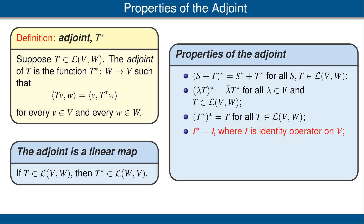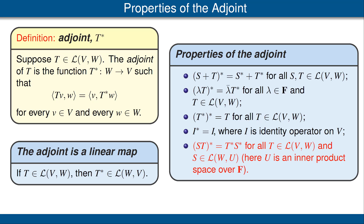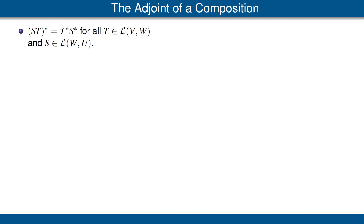The last one we will do here. The last one says the adjoint of a product is the product of the adjoints but in the reverse order. So let's give a proof of that. I have repeated the bullet point that we are going to prove — that the adjoint of a product is the product of the adjoints with the order reversed.